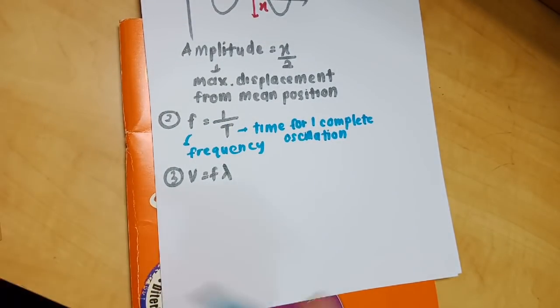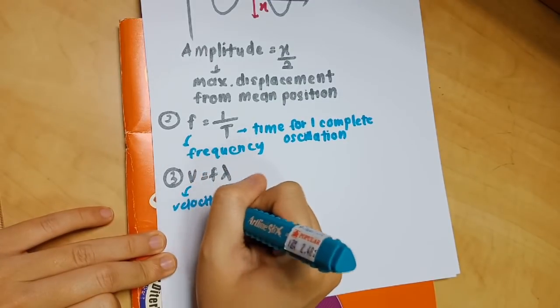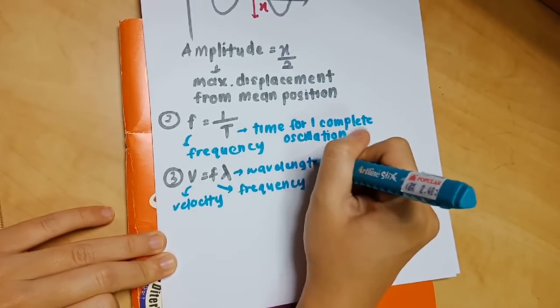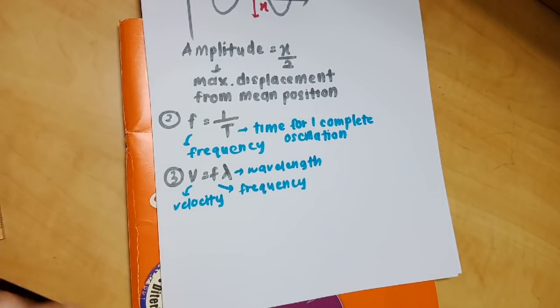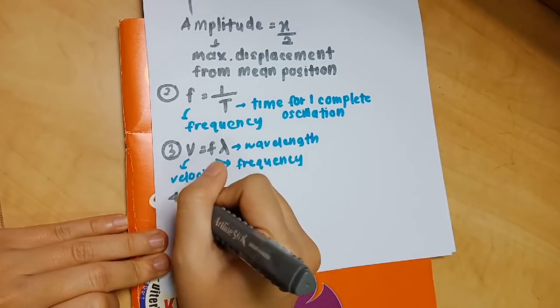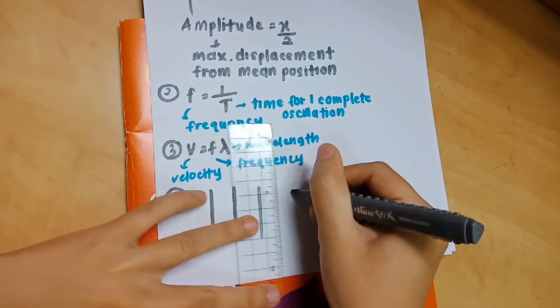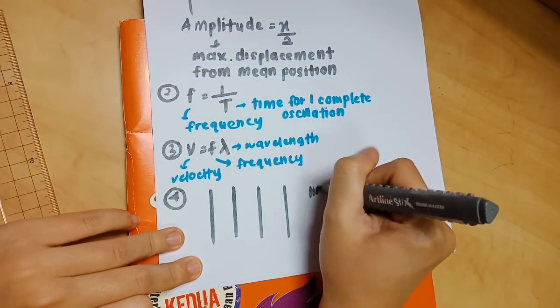Number 4: I'm drawing some lines to represent crest, so the lines represent crest and the space in between represents the troughs.